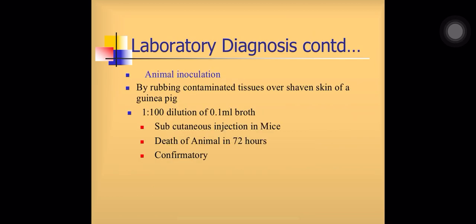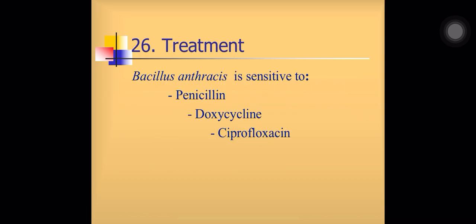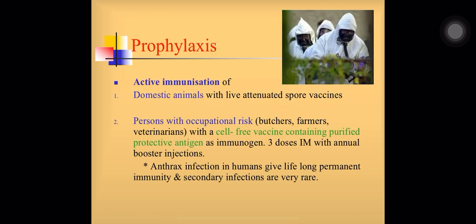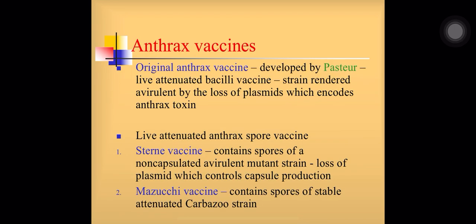Treatment: penicillin, doxycycline, ciprofloxacin. Prevention and control: improvement of factory hygiene, proper sterilization of animal products, animal carcasses to be buried deep in quick lime or cremated. Prophylaxis by active immunization — domestic animals need to be vaccinated, and people with occupational risks like butchers, farmers, and veterinarians should be given the vaccine. A cell-free vaccine containing purified protective antigen is available. The original anthrax vaccine was developed by Pasteur as a live attenuated bacilli vaccine. Now live attenuated anthrax spore vaccines are available: Sterne vaccine, containing spores of a non-capsulated avirulent mutant strain, and the Mazuchi vaccine, containing spores of a stable attenuated carbazole strain.